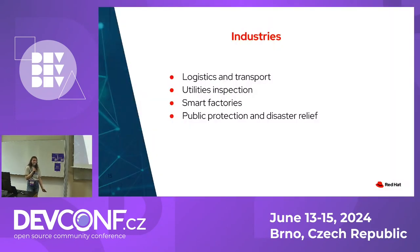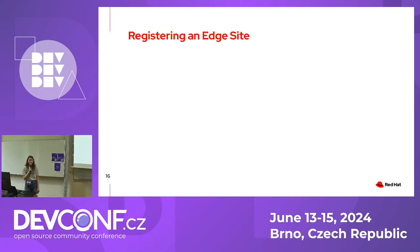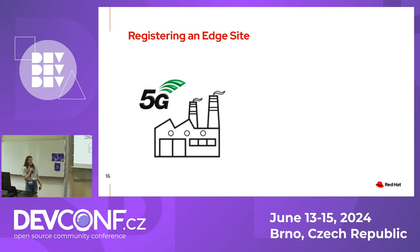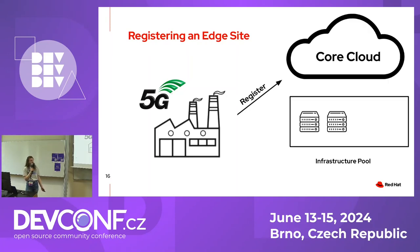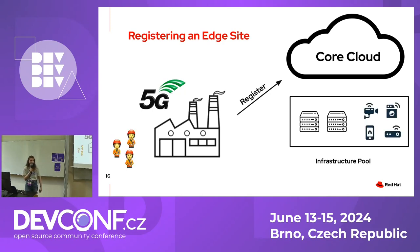ENCODE can be used to develop applications in many different industries: logistics and transport, utilities, inspections, smart factories, public protection, and disaster relief. As an example, to register an edge site, you would install a 5G network in a factory, register it with a core cloud, then register edge processing nodes with the central infrastructure pool. Workers entering the facility with IoT devices — sensors, phones, or other equipment — are also added to the infrastructure pool. You then deploy applications such as a database for sensor data, AI models running on the devices, and message buses to track events.